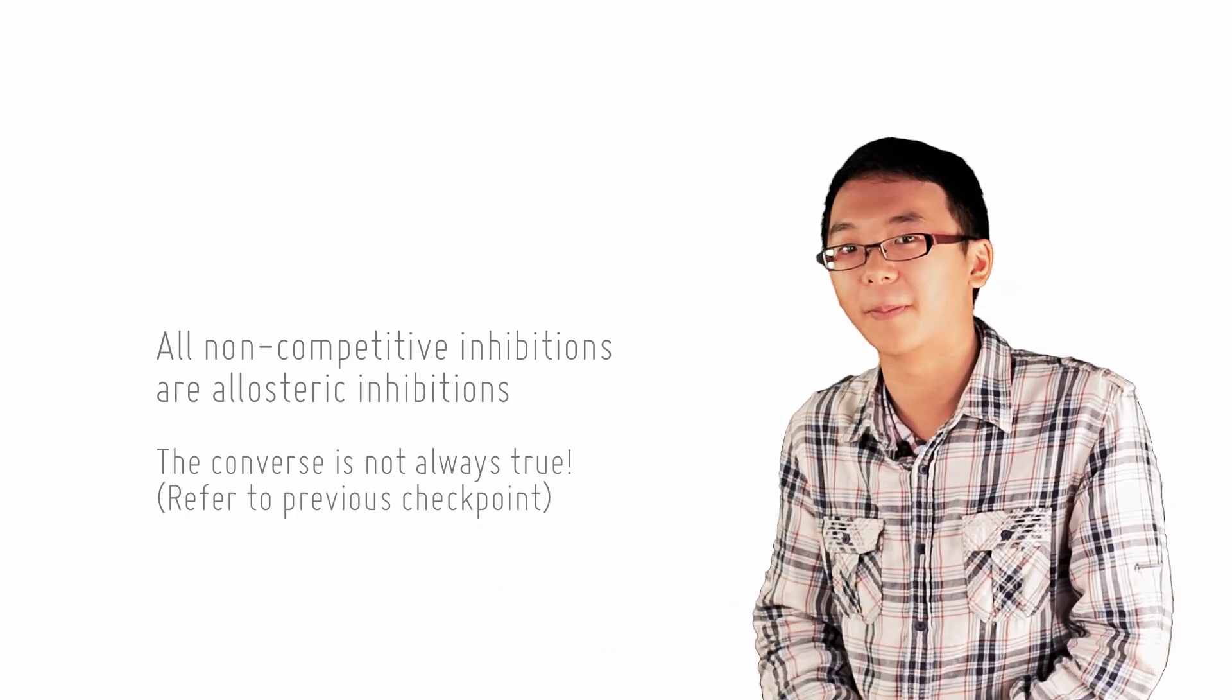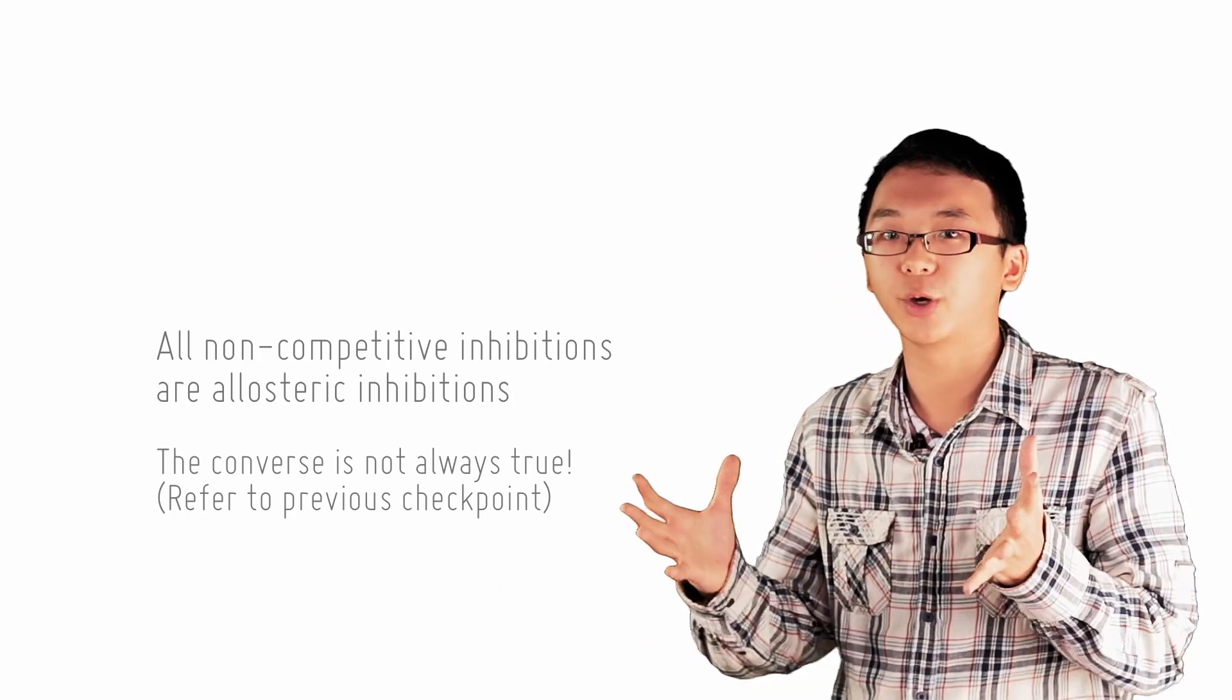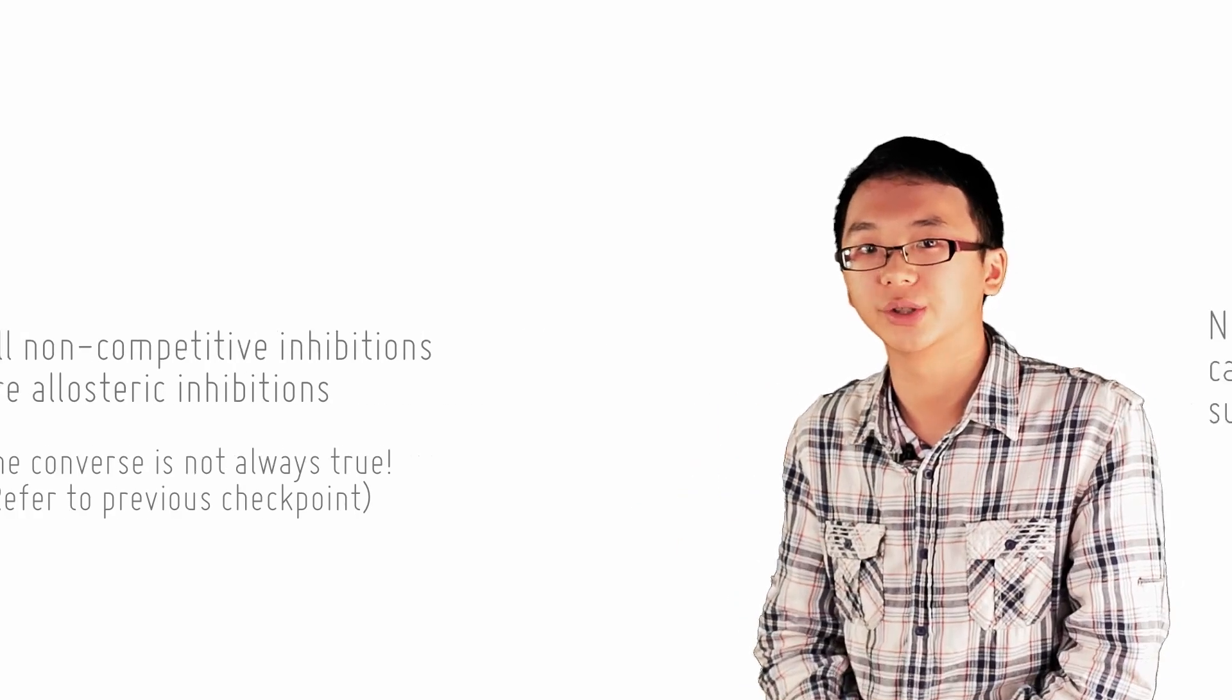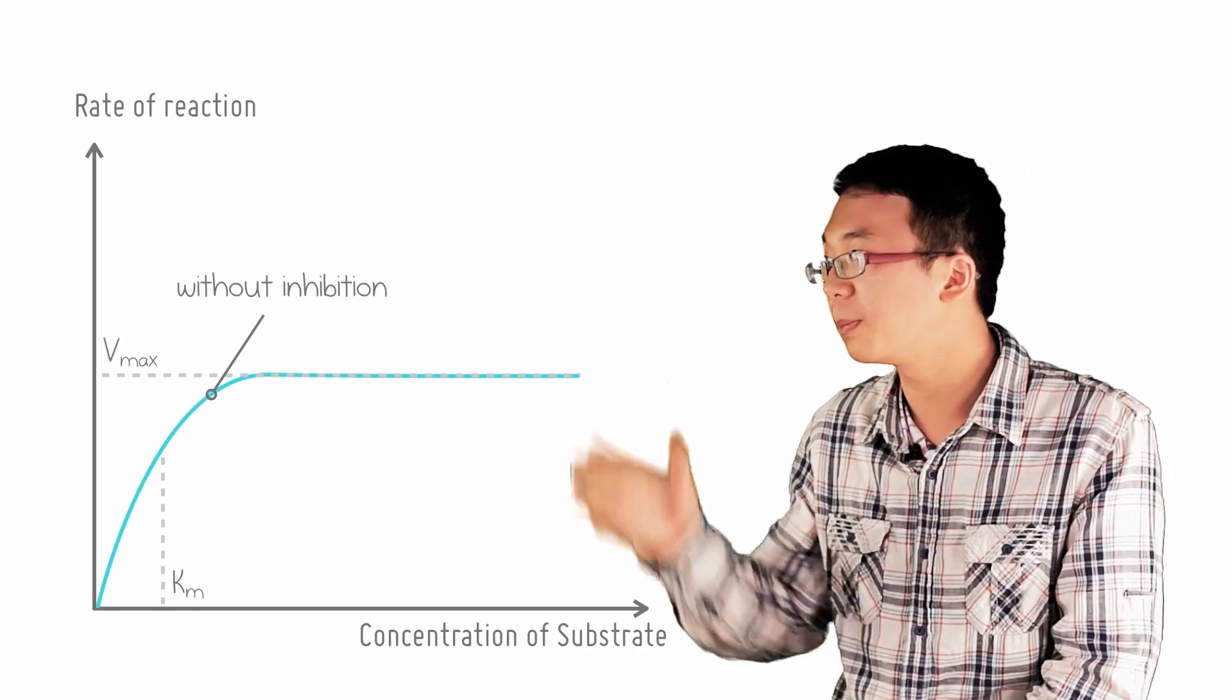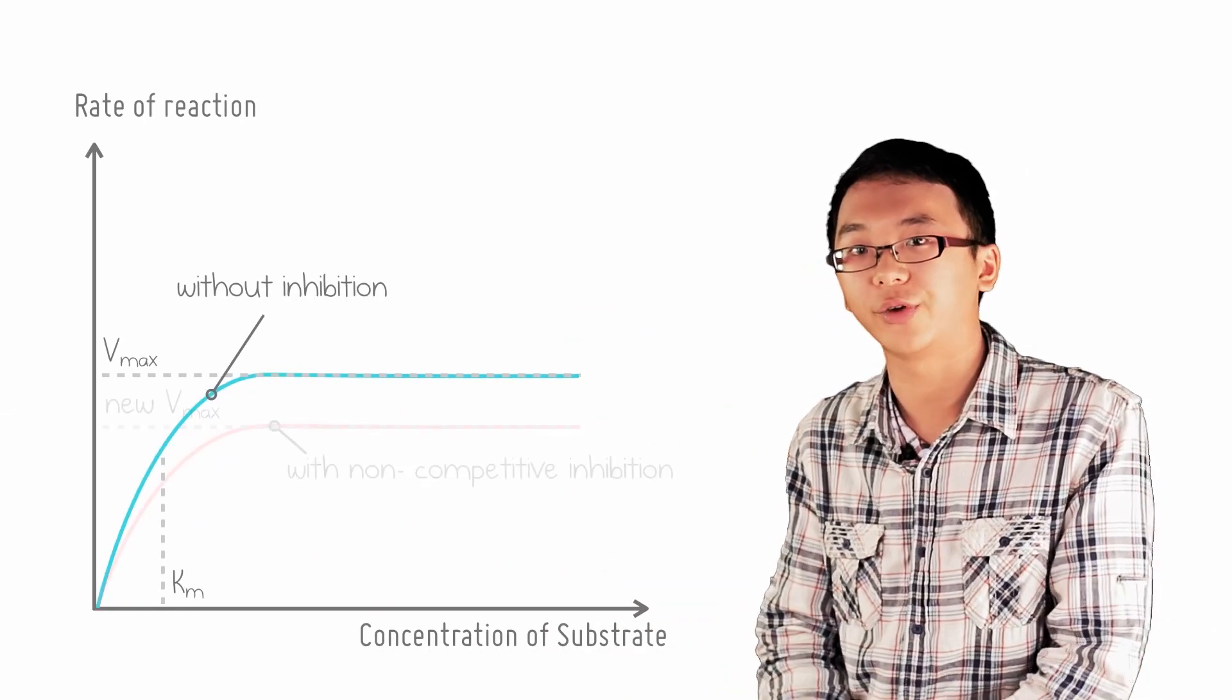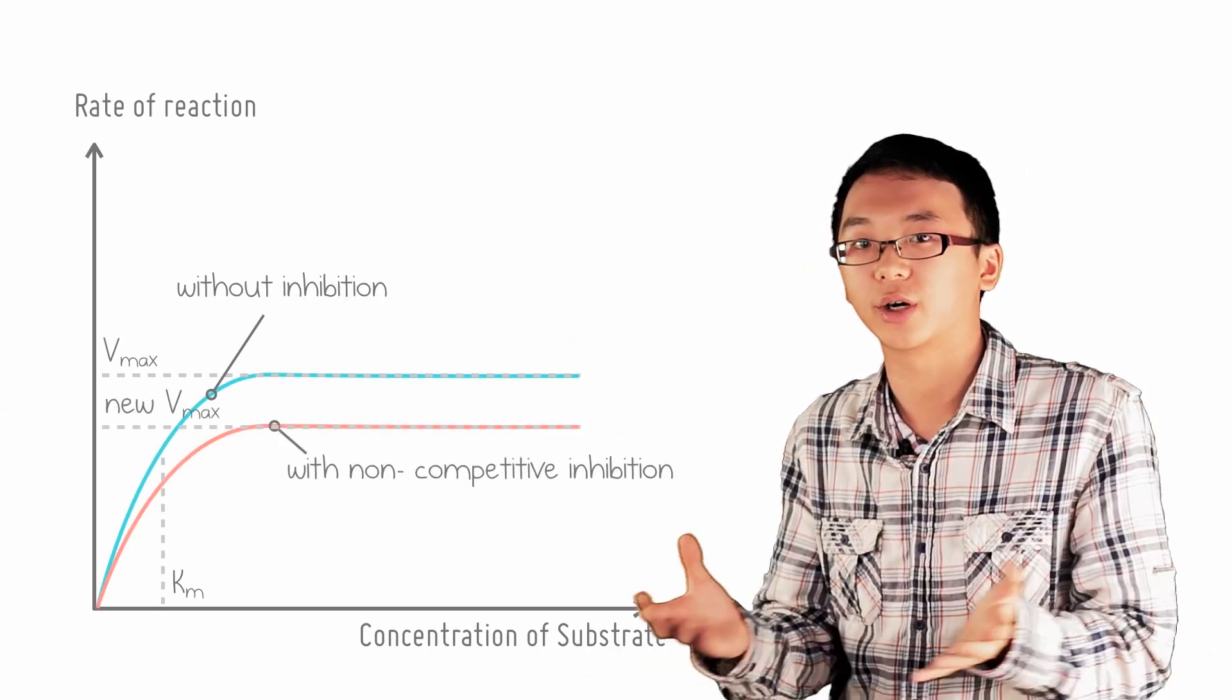Since the substrate and the inhibitor do not bind at the same site, it cannot be overcome by high substrate concentration. The graph of rate of reaction in the presence of a non-competitive inhibitor will not be able to reach the maximum rate of reaction even at high substrate concentration.